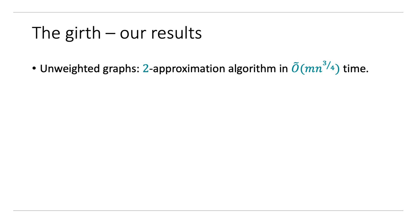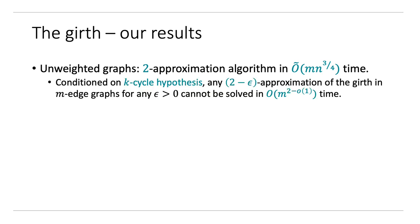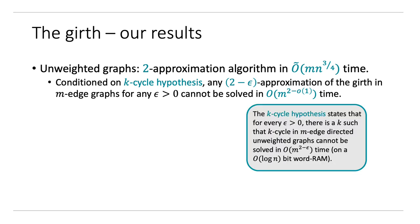What we do is first improve this approximation factor. We show a 2-approximation algorithm in order MN to the 3/4 time for unweighted graphs, and we show a matching lower bound. We show that under the K-cycle hypothesis, any better-than-2 approximation of the girth needs essentially M squared time. The K-cycle hypothesis says that for any epsilon, there is a value K such that if you want to detect a K-cycle in a directed graph, you need M to the 2 minus epsilon time.